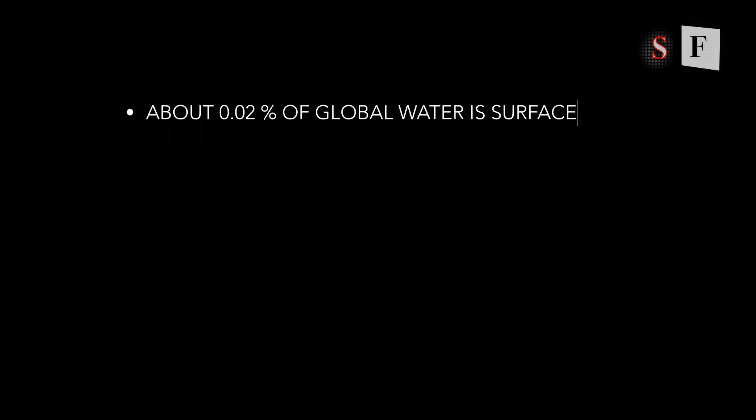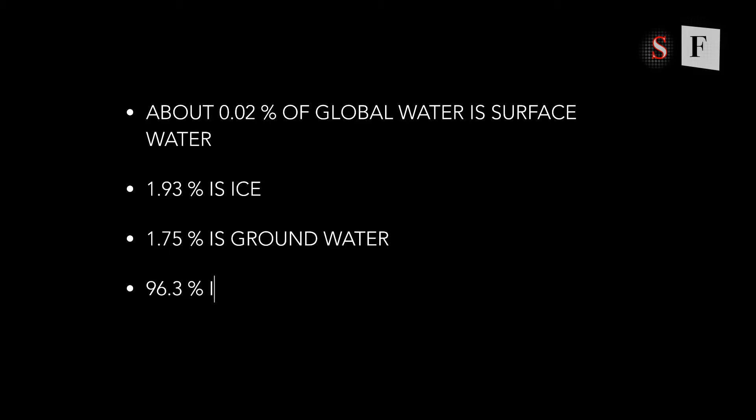About 0.02 percent of global water is surface water, 1.75 percent is groundwater, 1.93 percent is ice, and the remaining 96.3 percent is ocean water. Now let's find out what are the origins of water on the surface as well as inside the ground surface of the earth.